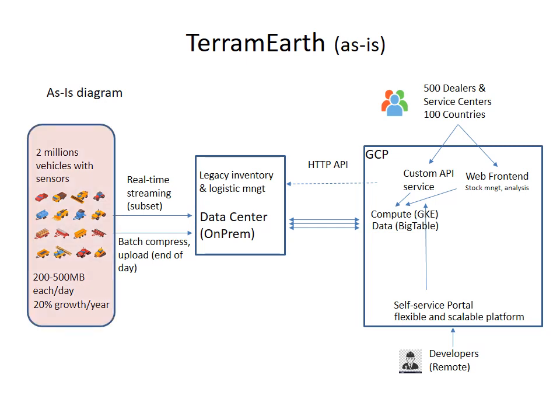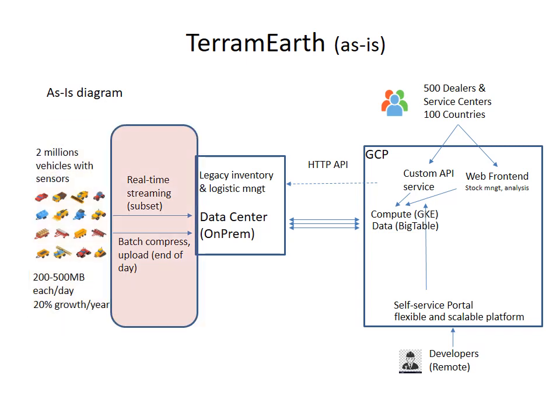First of all, let's start with 2 million vehicles with sensors which send data to the data center — from 200 megabytes to 500 megabytes each day — expecting growth of 20 percent per year. Data is sent two ways: number one is real-time streaming, which is only a subset, and number two is the batch compressed upload which happens by the end of the day.